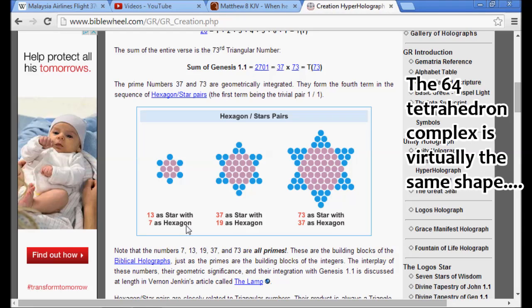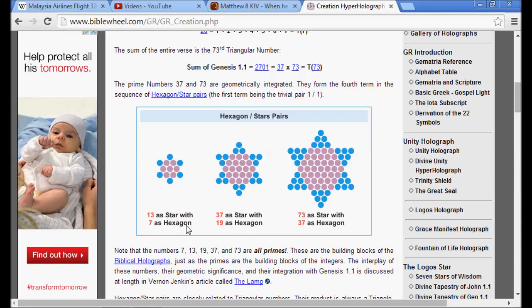As you see here, it is called a hexagon-star pair, and that is the significance of 73 and 37. It's geometric. And of course, this hexagon is really a three-dimensional cube. And of course, we have the star behind it.